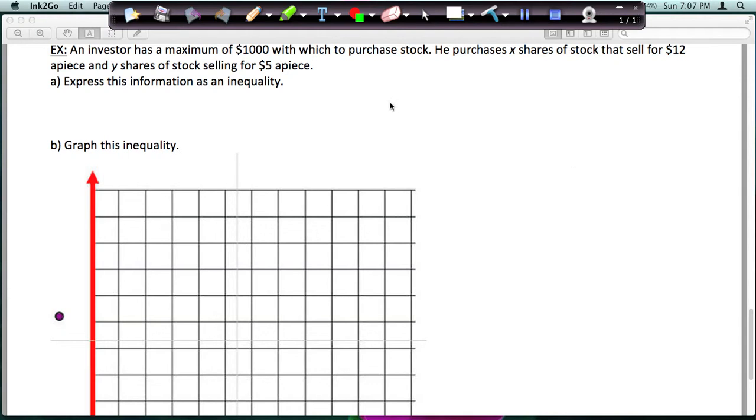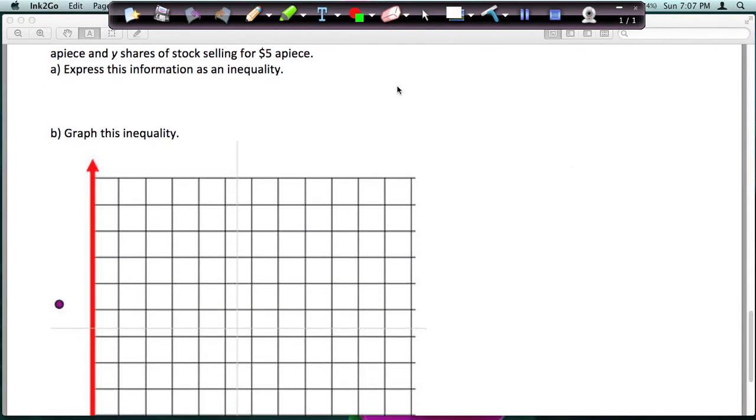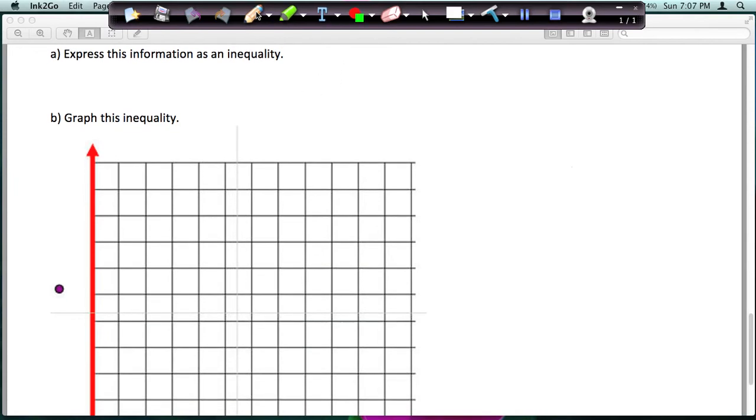So he doesn't know exactly how much on X and Y he wants to buy, but he knows he has $1,000 at the most to spend. He could spend less if he wanted. So this would be the $12 times however many of the X stock he buys plus $5 times however many of the Y stock he buys, and this has to equal less than or equal to $1,000. So he can spend $1,000 or less, he just can't spend any more. So he doesn't have to spend exactly $1,000, so that's why it's not an equal sign.